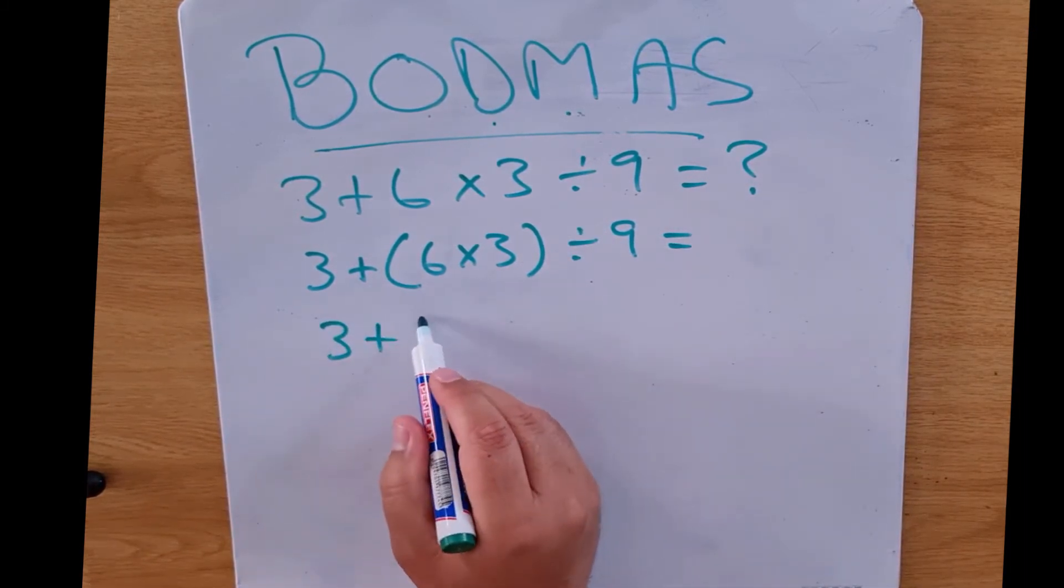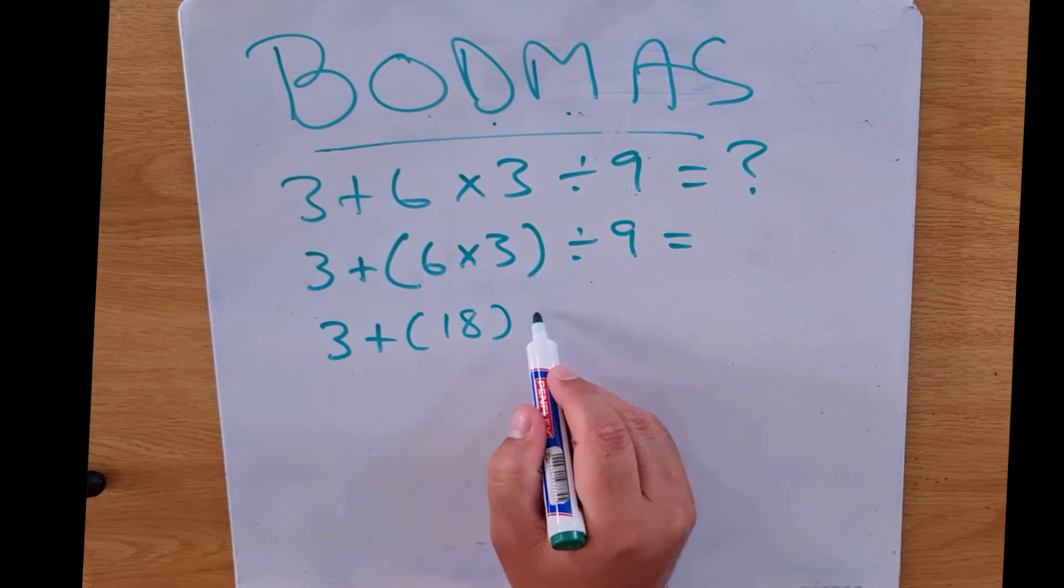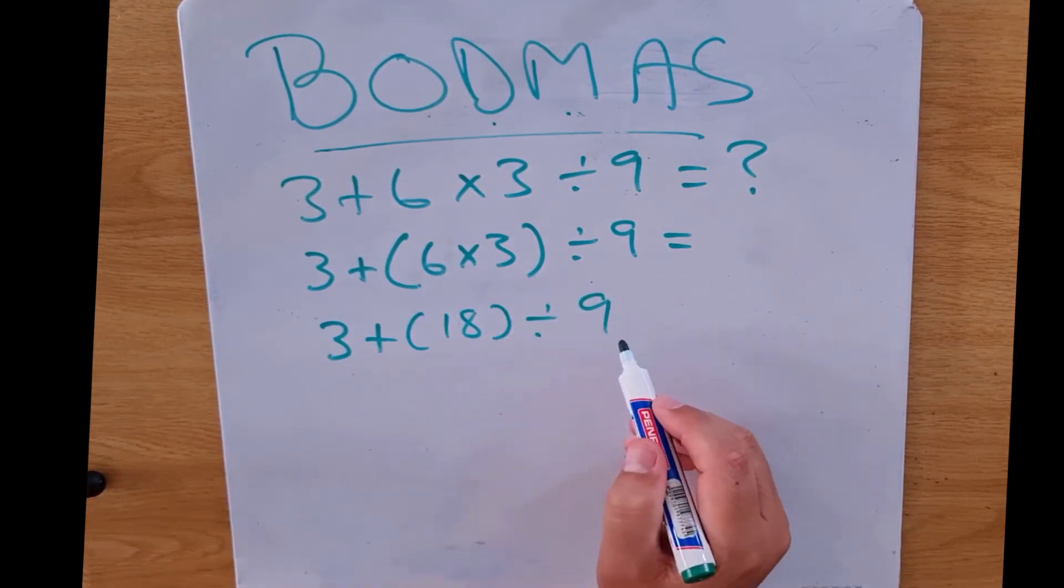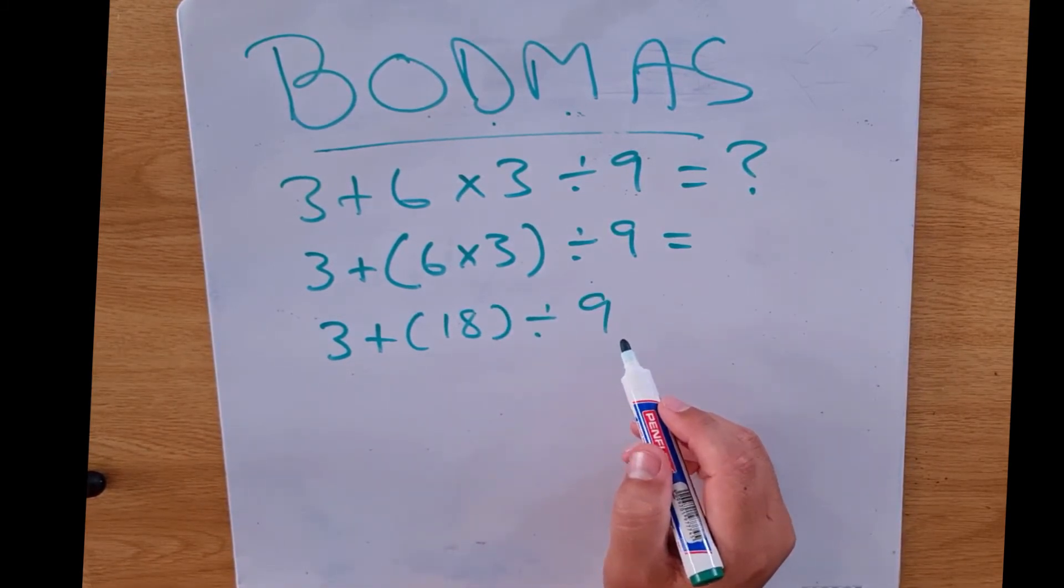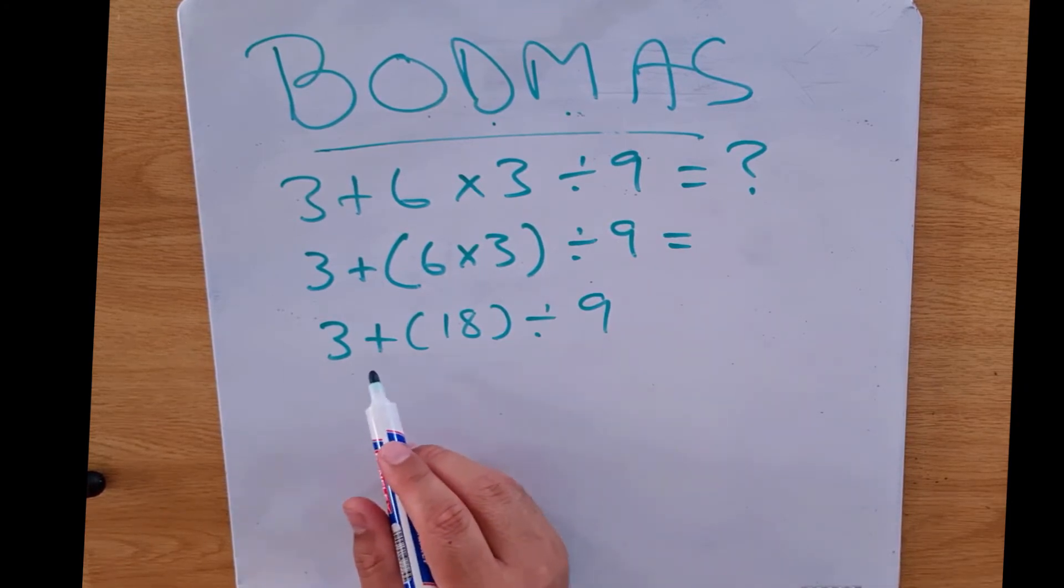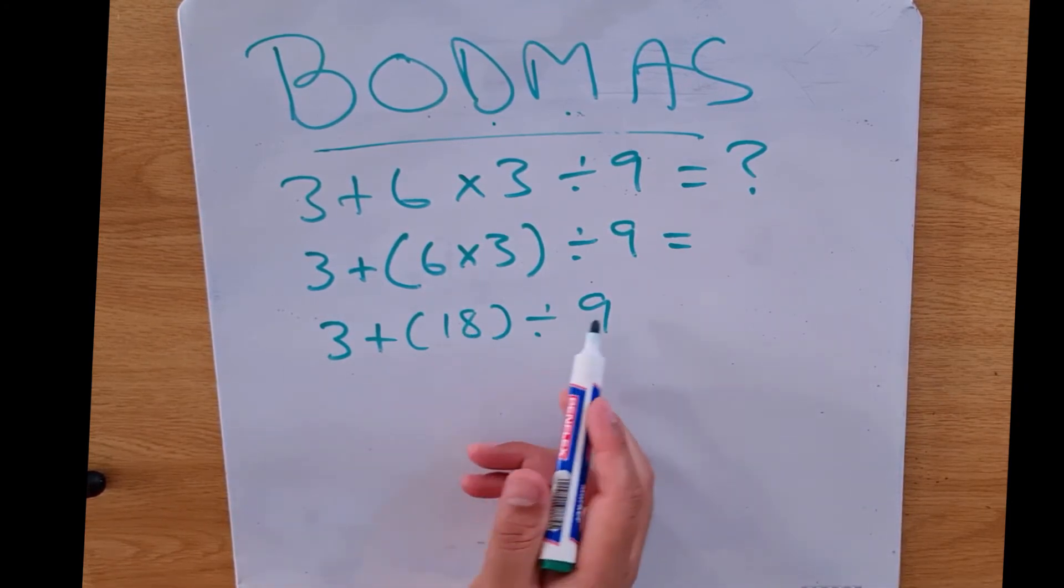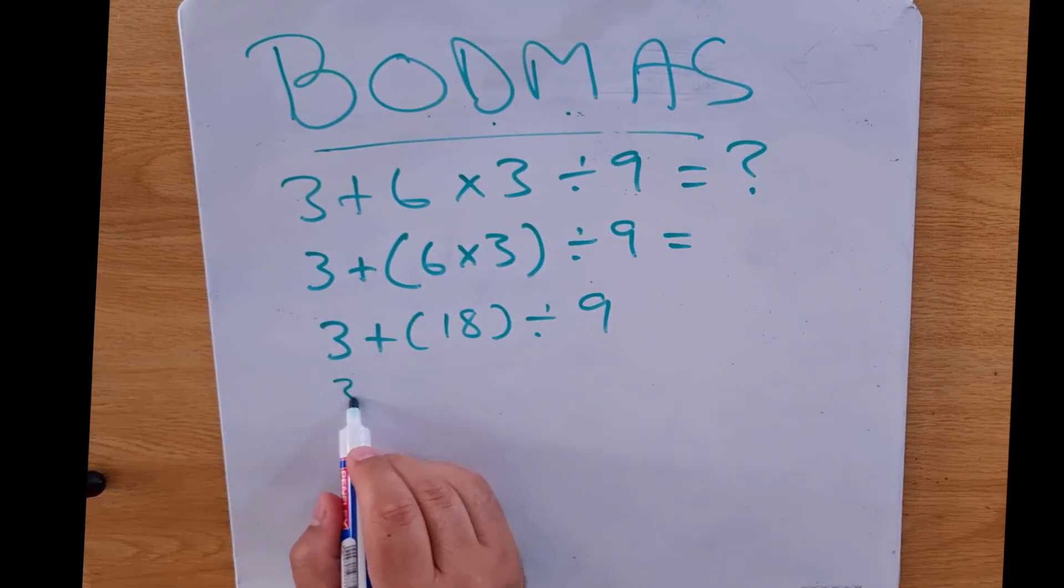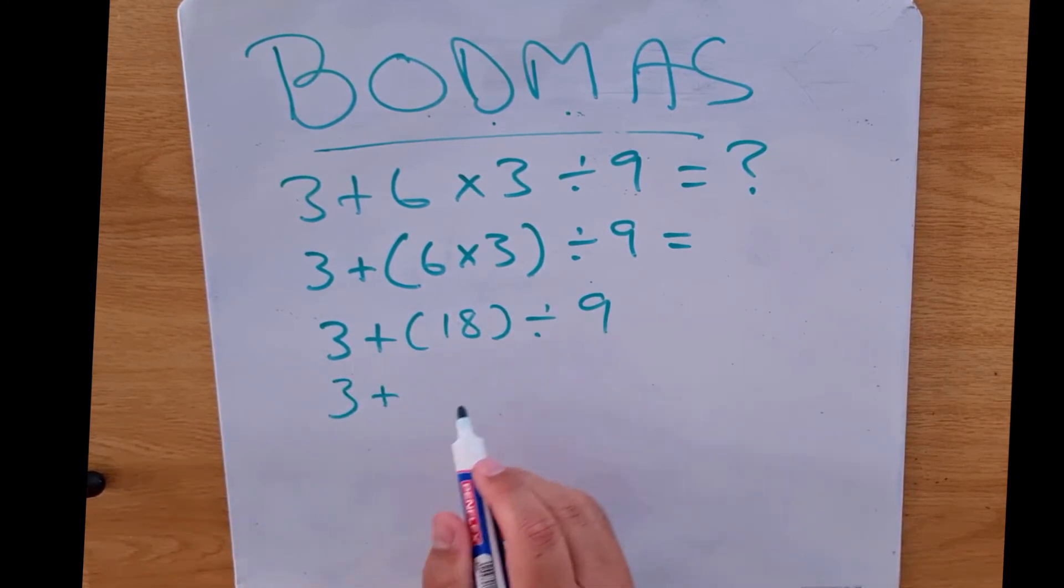Then I'm going to go to the next level: 3 plus 18 divided by 9. So what's going to happen now? I'm going to be dividing because that's the next one. 3 plus 18 divided by 9. We know that's 2, and therefore my answer is going to be 5.